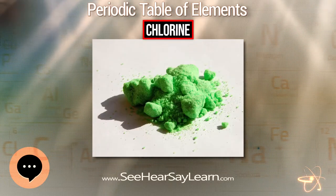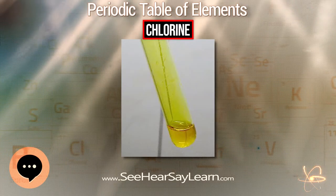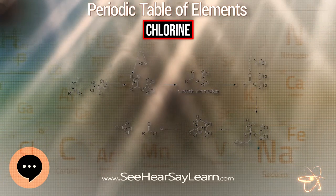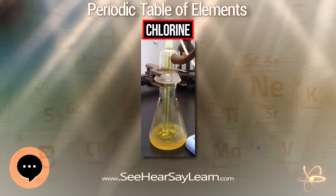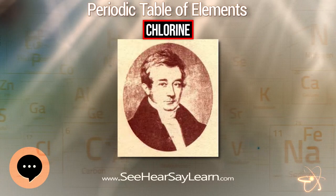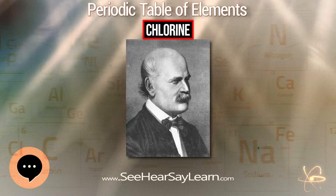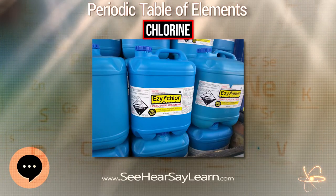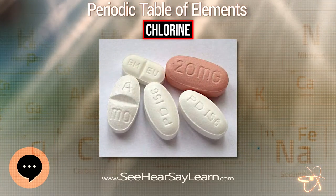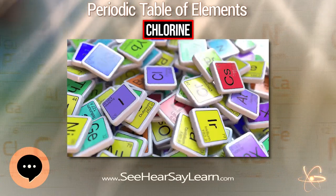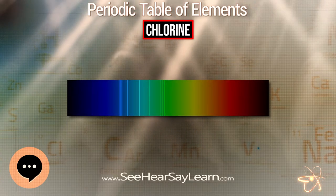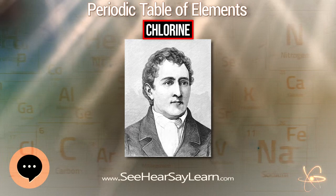Chlorine dioxide explodes above 40°C as a liquid and under pressure as a gas, and therefore must be made at low concentrations for wood pulp bleaching and water treatment. It is usually prepared by reducing a chlorate. It is a strong oxidizing agent, reacting with sulfur, phosphorus, phosphorus halides, and potassium borohydride. It dissolves exothermically in water to form dark green solutions that very slowly decompose in the dark. In the presence of light, these solutions rapidly photodecompose to form a mixture of chloric and hydrochloric acids. Photolysis of ClO₂ molecules results in the radicals ClO and Cl₂O, while at room temperature mostly chlorine, oxygen, and some ClO₃ and Cl₂O₆ are produced.